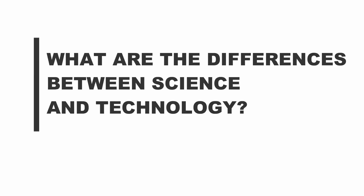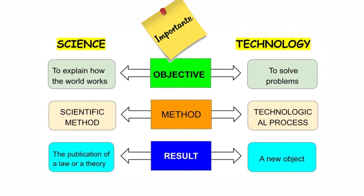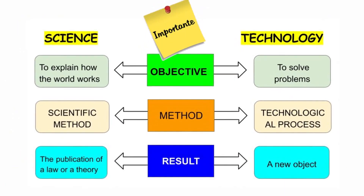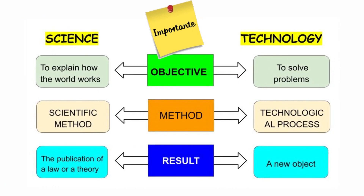What are the differences between science and technology? This table clearly illustrates the differences. As you can see, the objective, the method, and the results are different for science and technology.